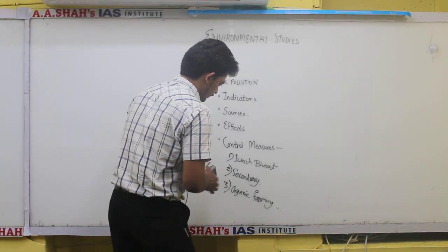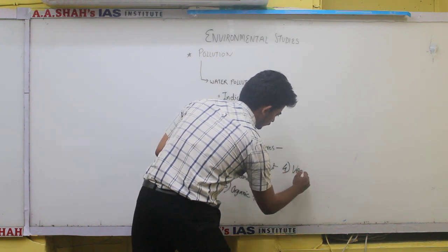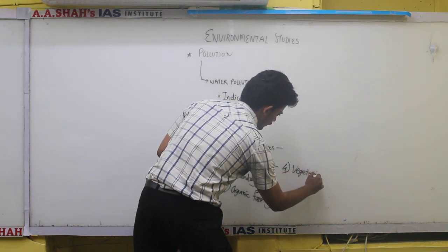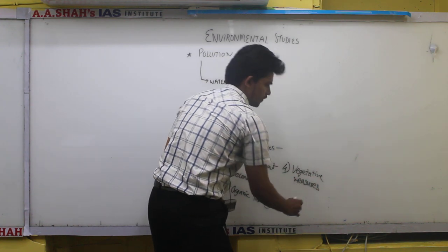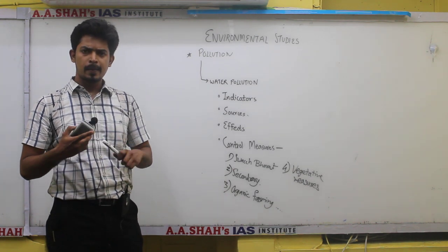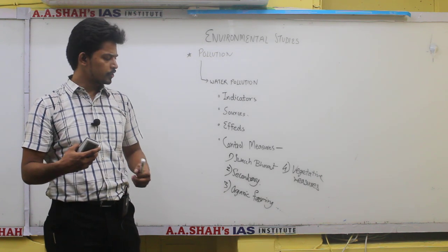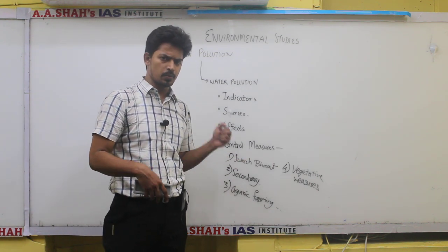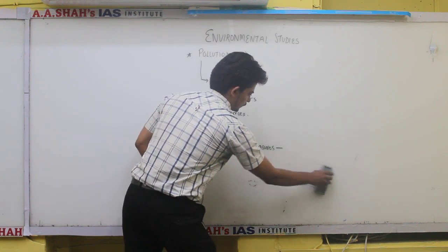Apart from that, there are certain vegetation or vegetating materials. For example, water hyacinth. If it is grown in a water body, it has the ability to absorb heavy metals inside. This also acts as a purifying agent in the water.